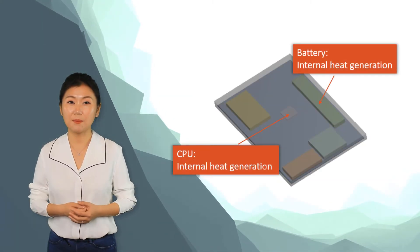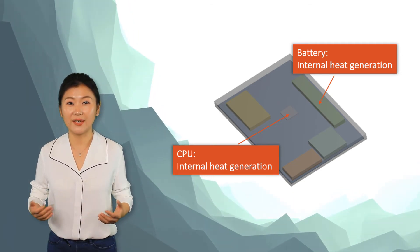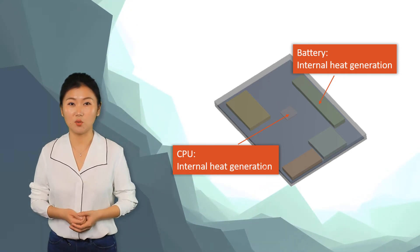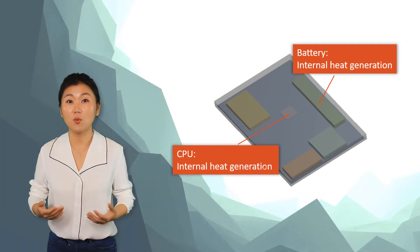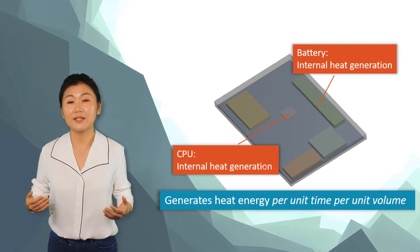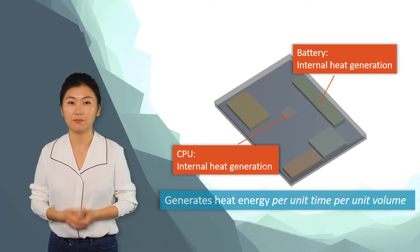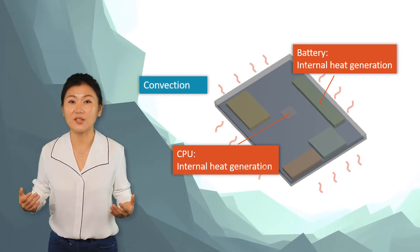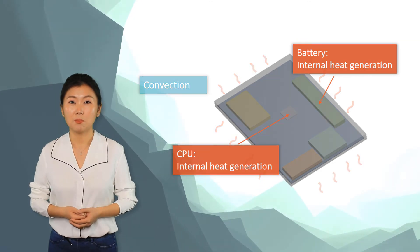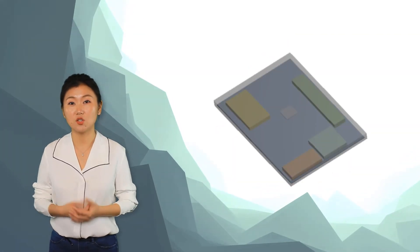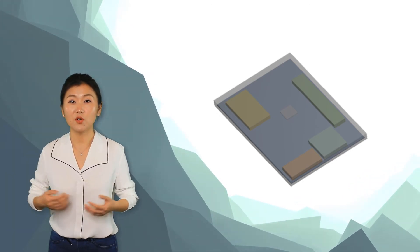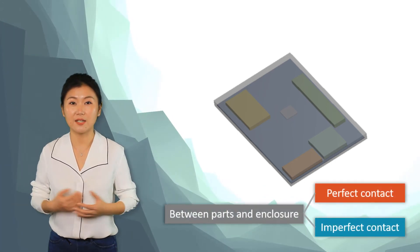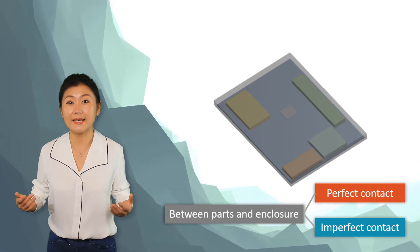Now, let's look at the boundary conditions for this problem. The two main sources of heating are the CPU and the battery. Here, we define internal heat generations on these components. An internal heat generation is always applied to a volume. It represents that heat energy is generated per unit time per unit volume. For the outflow of the heat energy, we define the convection boundary condition on the outside surface of the plastic enclosure. Between different electronic components and the plastic enclosure, thermal contact is defined. For the contact between the components and the plastic enclosure, we will test perfect and imperfect conductance and see how much the internal components is heated up in these two tests.